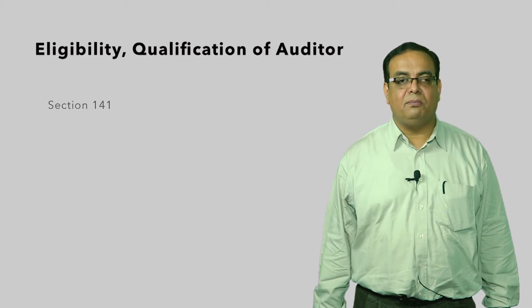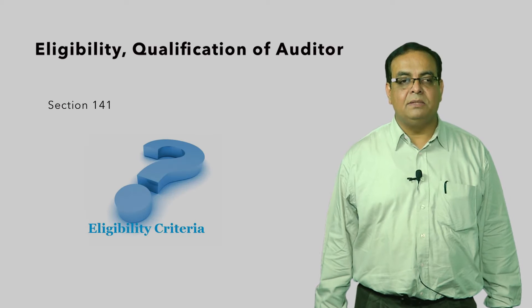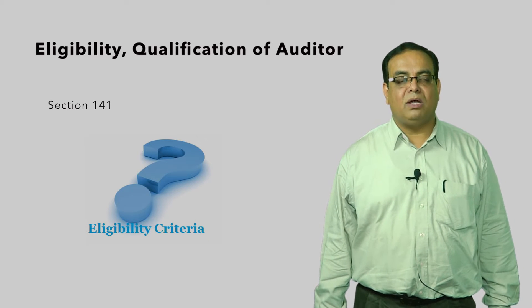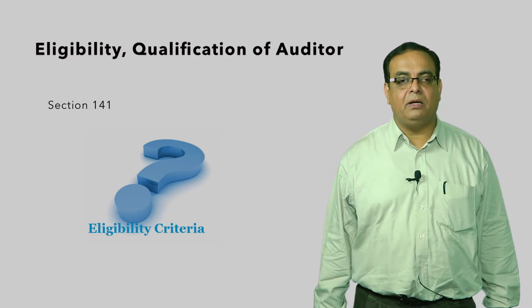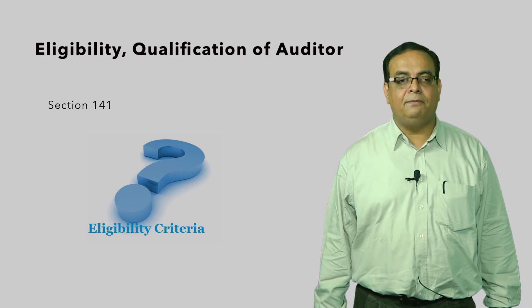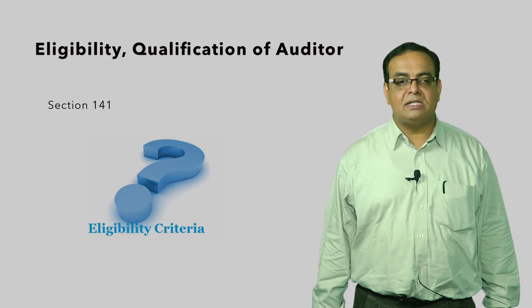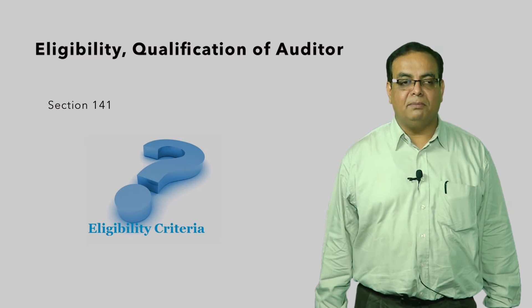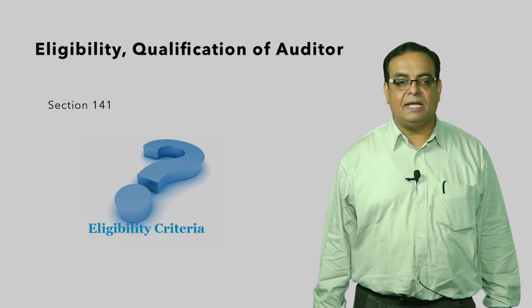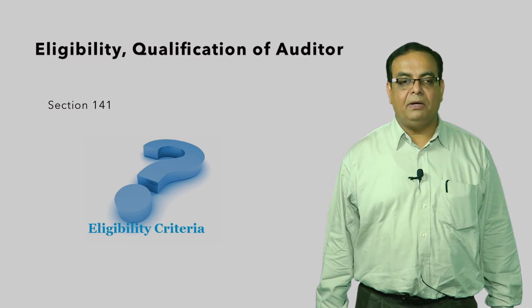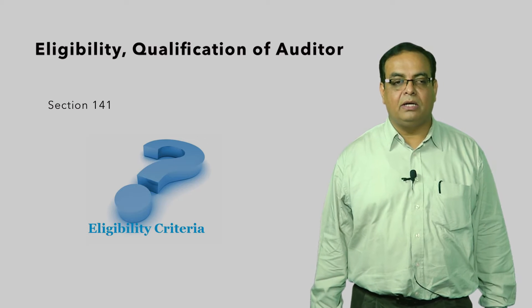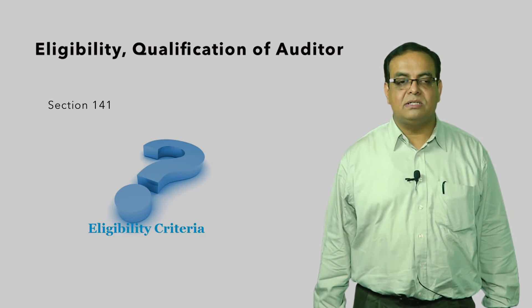Section 141 talks about eligibility and qualification of the auditor. It says that a person shall be eligible for appointment as an auditor of a company only if he is a chartered accountant. A firm where a majority of partners practicing in India are qualified may be appointed by its firm name. Where a firm including a limited liability partnership is appointed as auditor, only the partners who are chartered accountants shall be authorized to act and sign on behalf of the firm.